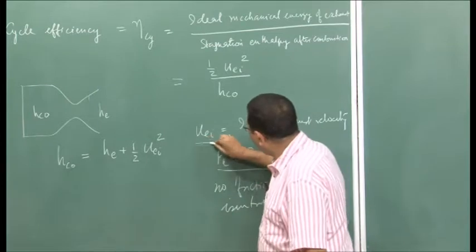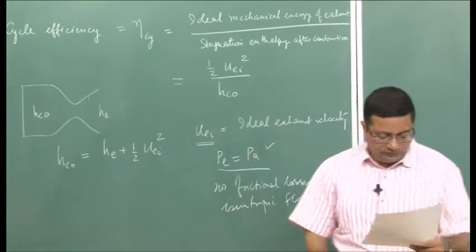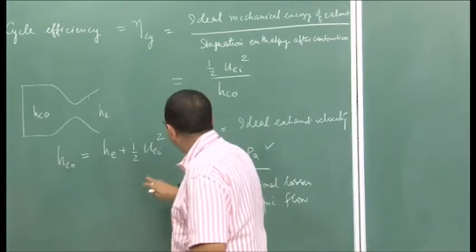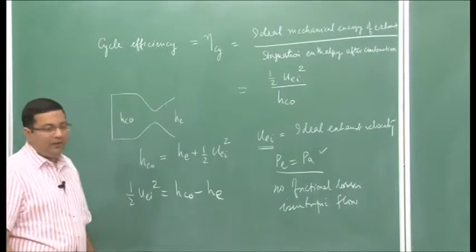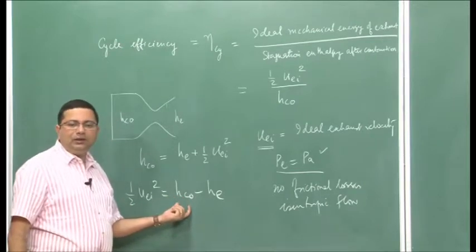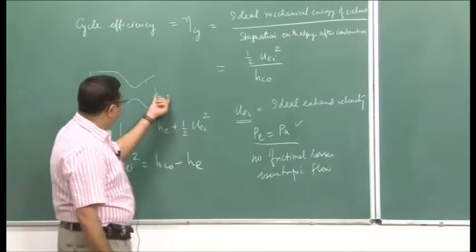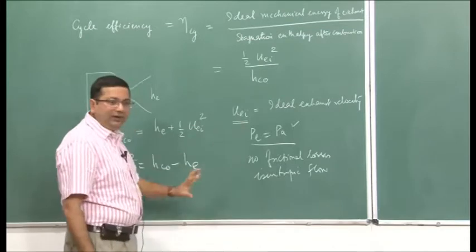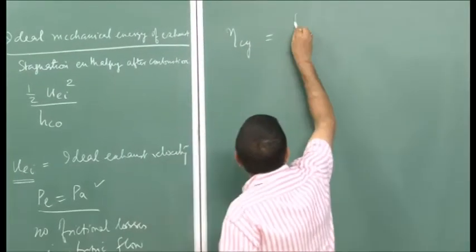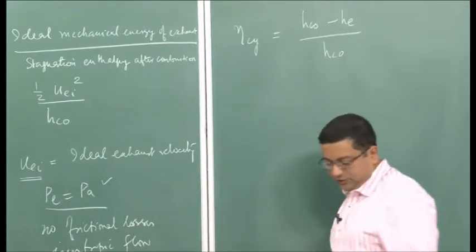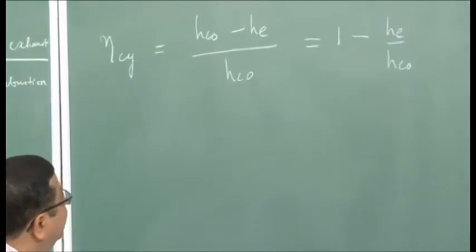The cycle efficiency is defined with respect to the ideal kinetic energy and the stagnation enthalpy at the inlet of the nozzle. The kinetic energy (1/2)*U_Ei² equals the difference in enthalpy between the nozzle inlet and exit. So the cycle efficiency can be written as (H_C0 - H_E) / H_C0, which simplifies to 1 - H_E / H_C0.